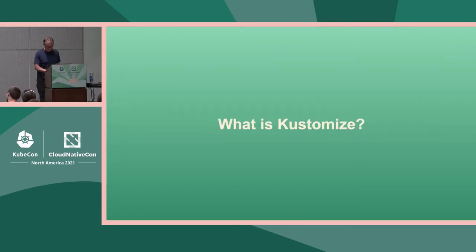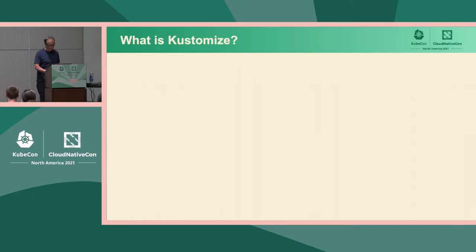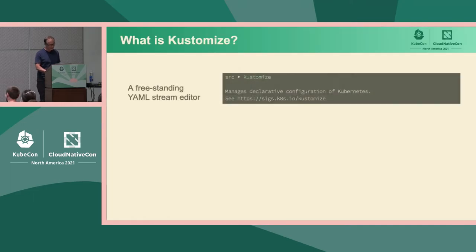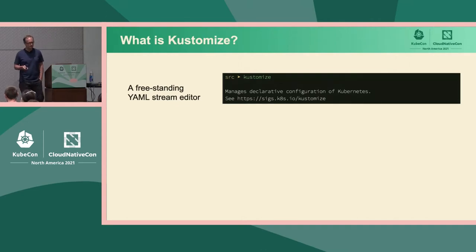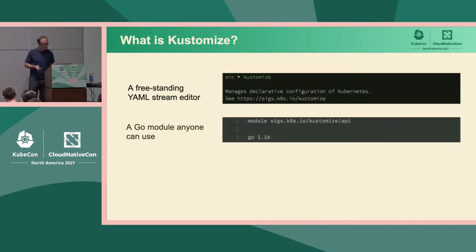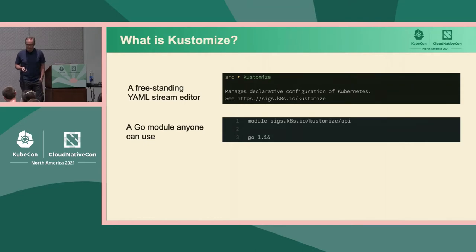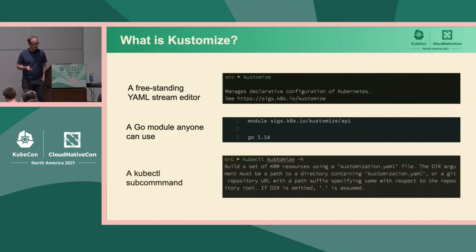Let me review what Kustomize is so we can talk about extending it. It's three things: it's a command line utility, a freestanding YAML editor that knows about Kubernetes; it is a set of Go modules; and it is also a command in kubectl.